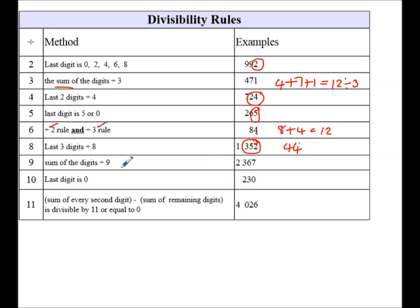Divisibility by 9, I add the digits. It's 2 plus 3 plus 6 plus 7 equals, 3 and 2 is 5, and 6 is 11, and 7 is 18. 18 divided by 9 is 2, so that number is divisible by 9.